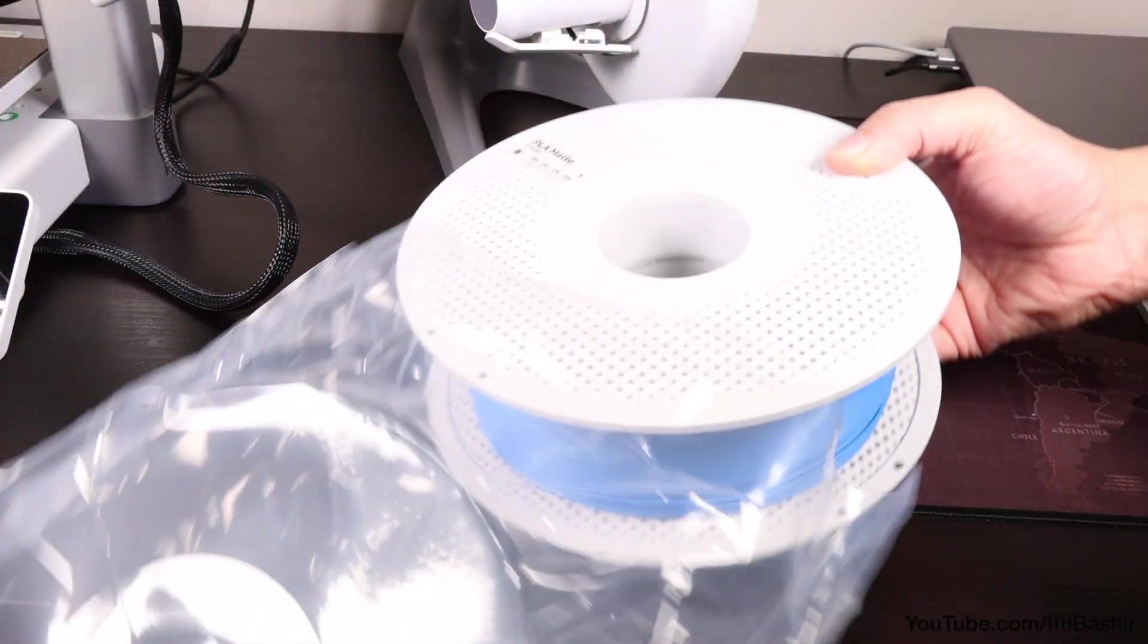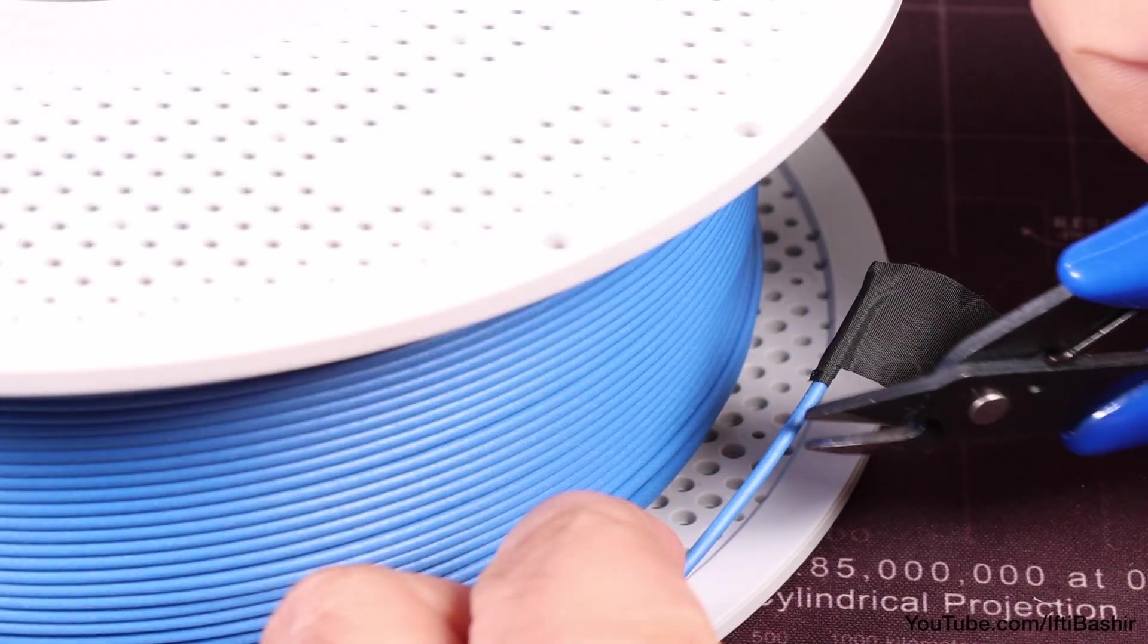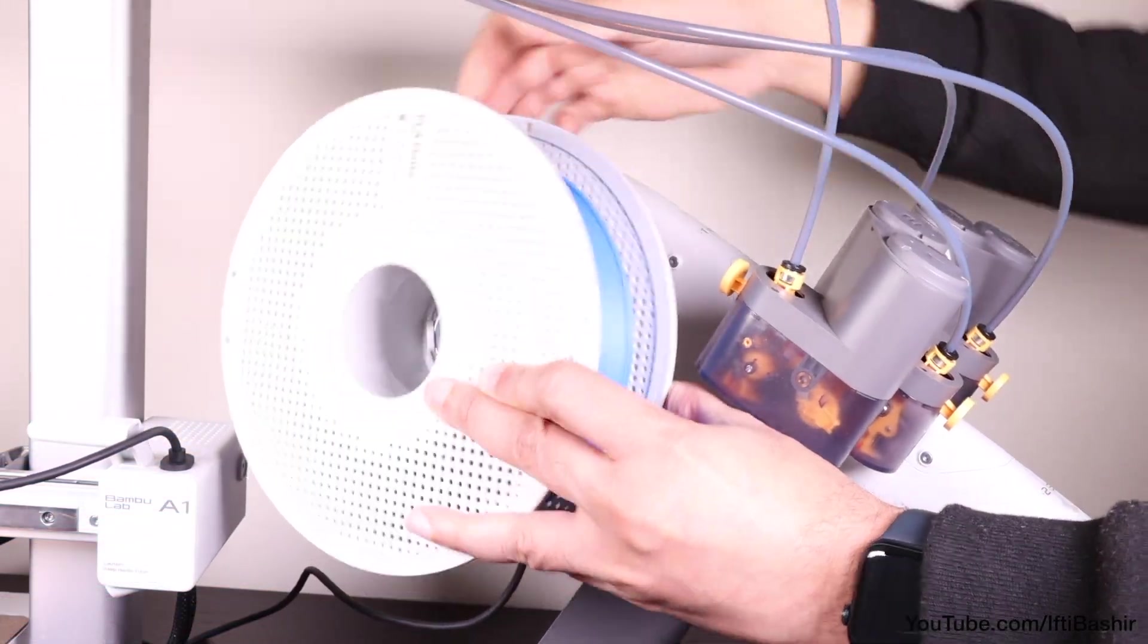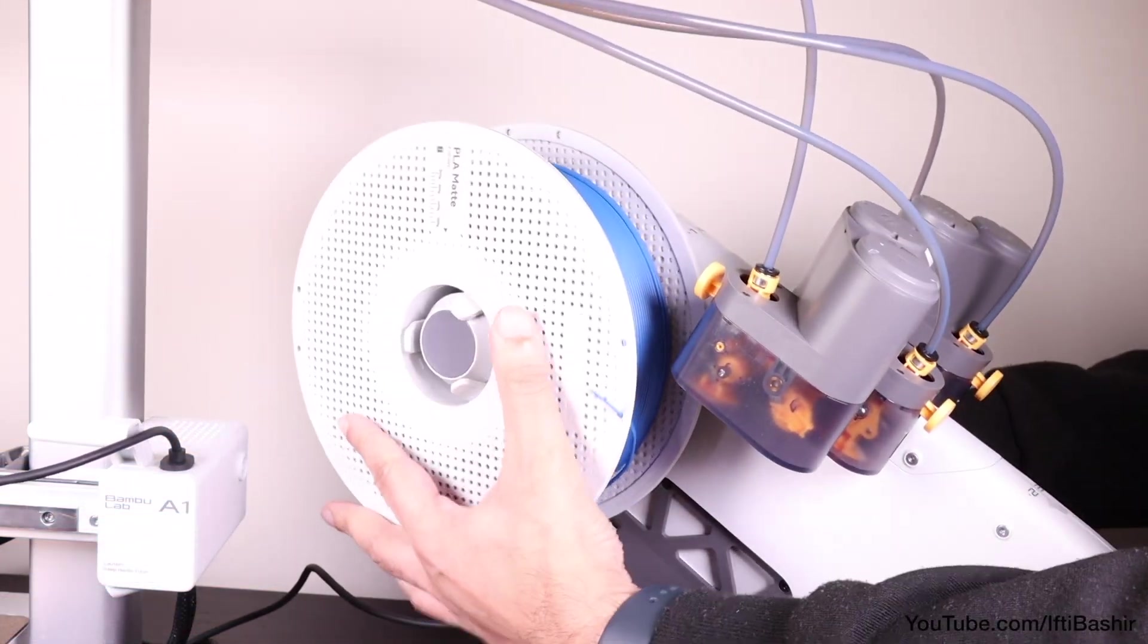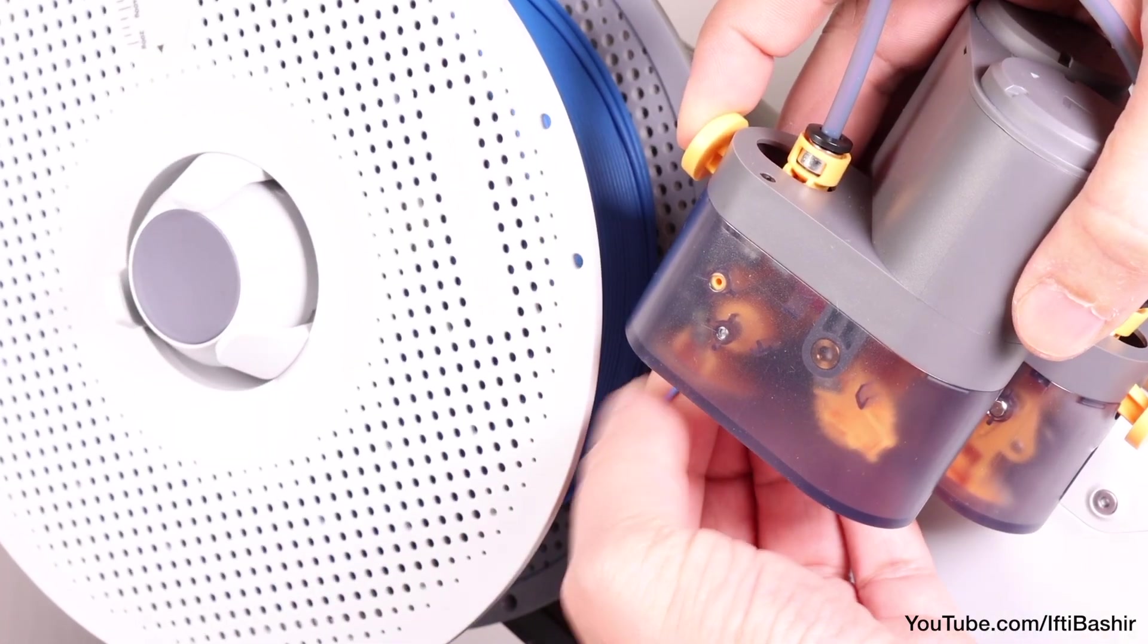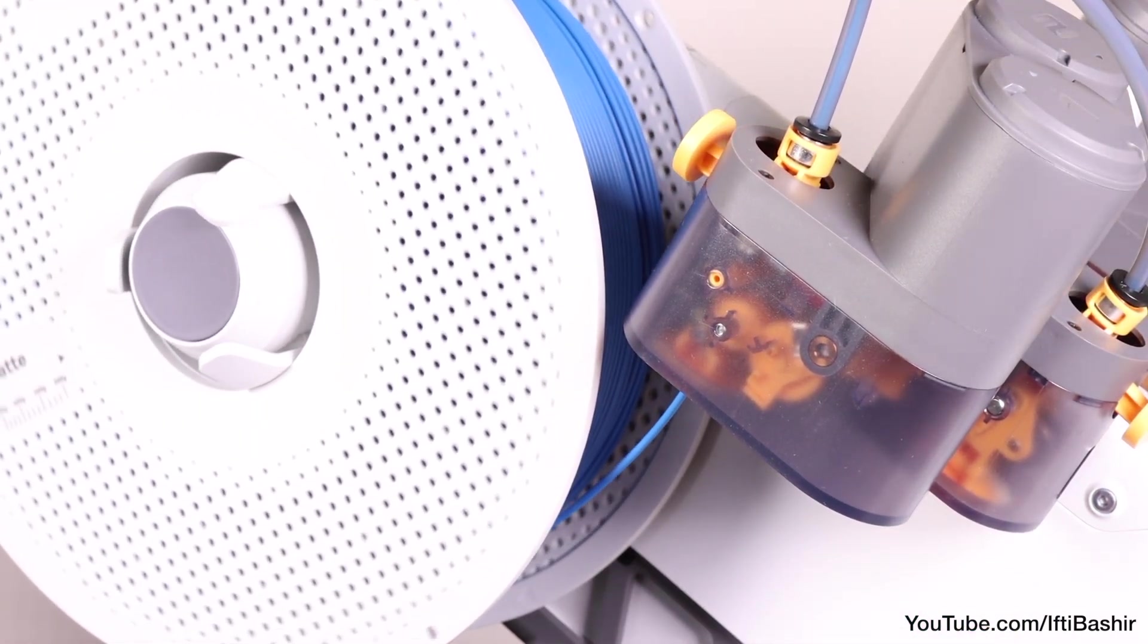I'll be using bamboo PLA filament although most brands are supported. So with a spool unpackaged proceed to release the end and snip at an angle before pushing the spool onto the holder where a friction fit keeps it in place rather securely. And while feeding the filament into the system as you keep the button pressed, the unit will eventually grab the filament and load it through for you.